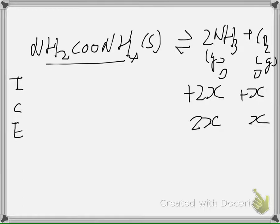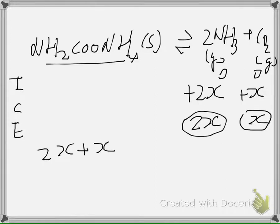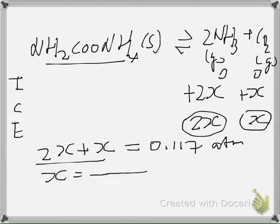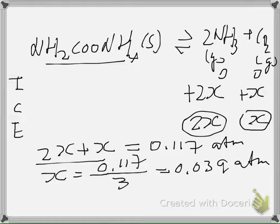All gases are in a sealed flask with a total partial vapor pressure of 0.117 atm. So 2X + X = 3X = 0.117 atm. Therefore X = 0.117 / 3 = 0.039 atm. And 2X = 0.078 atm. So the partial pressure of CO₂ is 0.039 atm and the partial pressure of NH₃ is 0.078 atm.